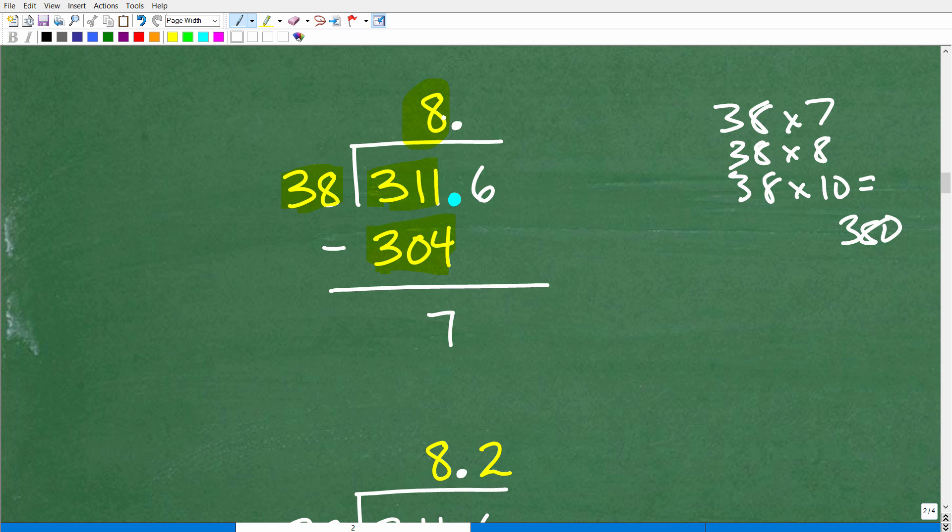So now notice here I have 8 because 8 is at, on this 311, notice where I put the 8, that's important. So, it's going to be 8 point. Whatever I have right here is going to be the rest of the quotient. I kind of stumbled there with my thoughts, but basically, this is where the decimal point is at, 8 point something that's going to be the answer. So, now we're like, 38 goes into 7 how many times? Well, 38 can't go into 7, so what do we do?